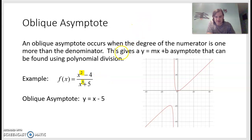But if we have an oblique asymptote, it will take on the form of y equals mx plus b. So in general, it will be a slanted line. We have vertical and horizontal lines as asymptotes, but this also gives us a chance to have a sloped line as an asymptote. And this can be found using polynomial division, which I'll show you in a moment.